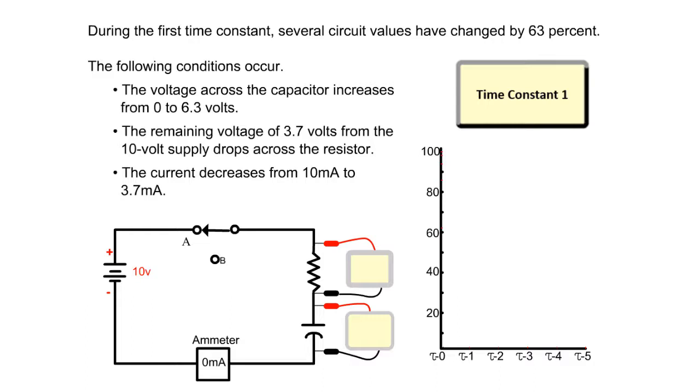The voltage across the capacitor increases from zero to 6.3 volts. The remaining voltage of 3.7 volts from the 10-volt supply drops across the resistor. The current decreases from 10 milliamps to 3.7 milliamps.